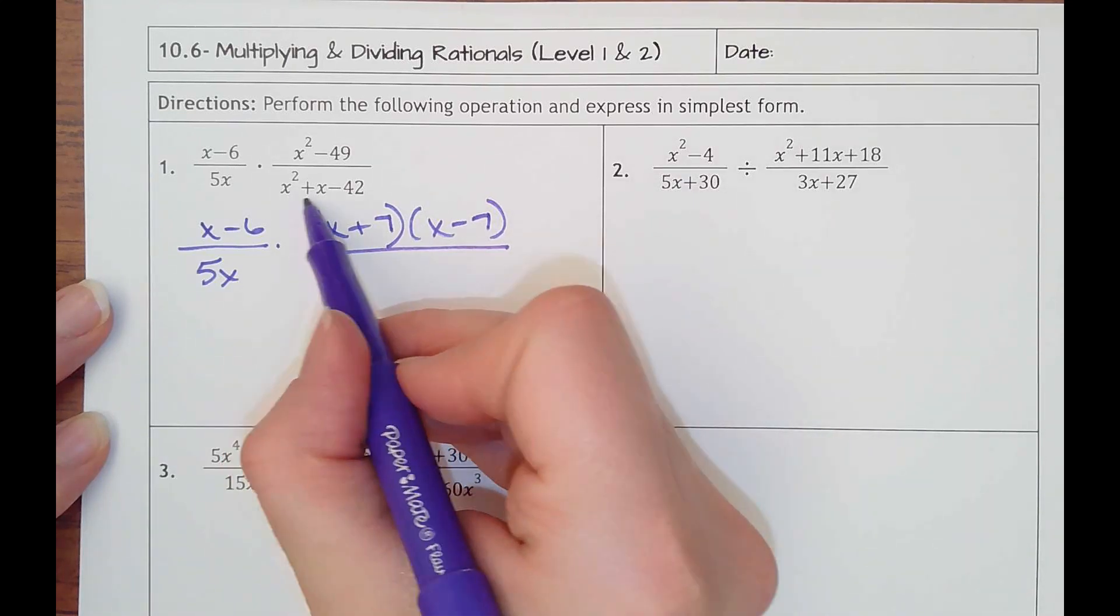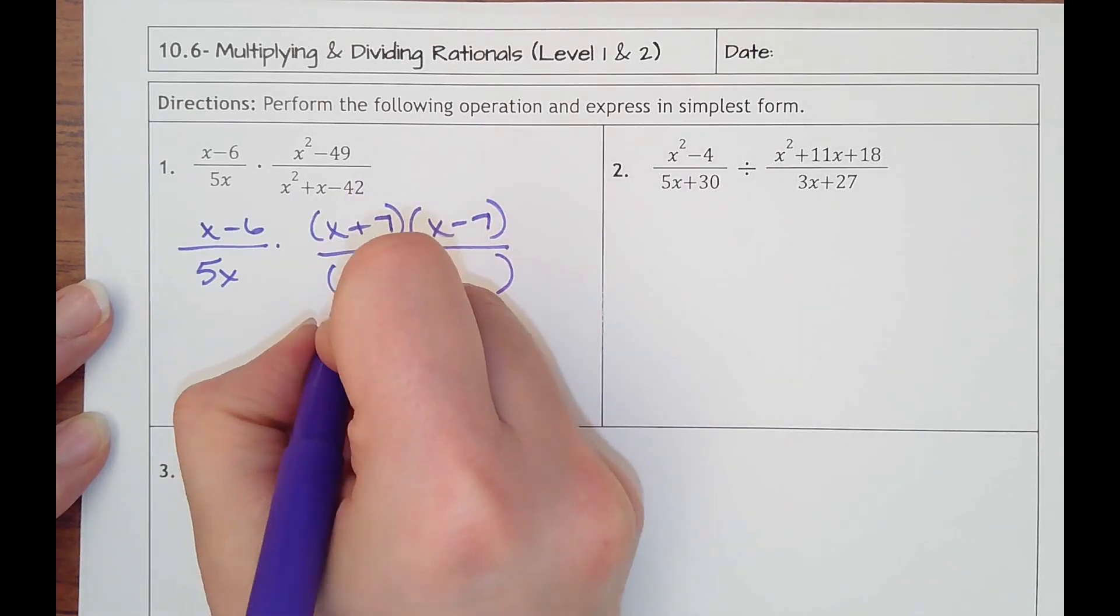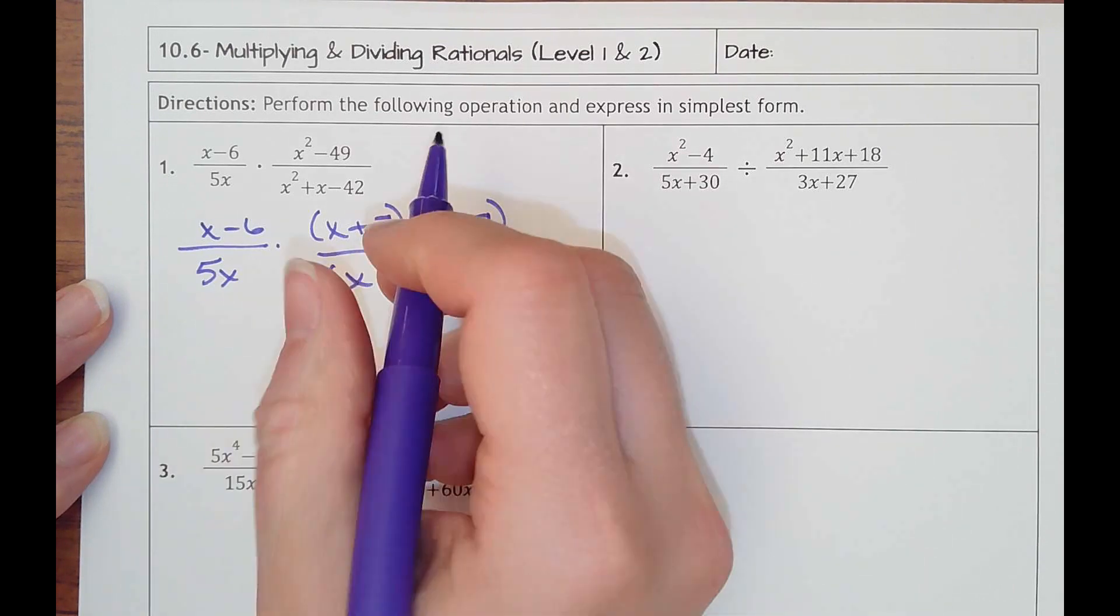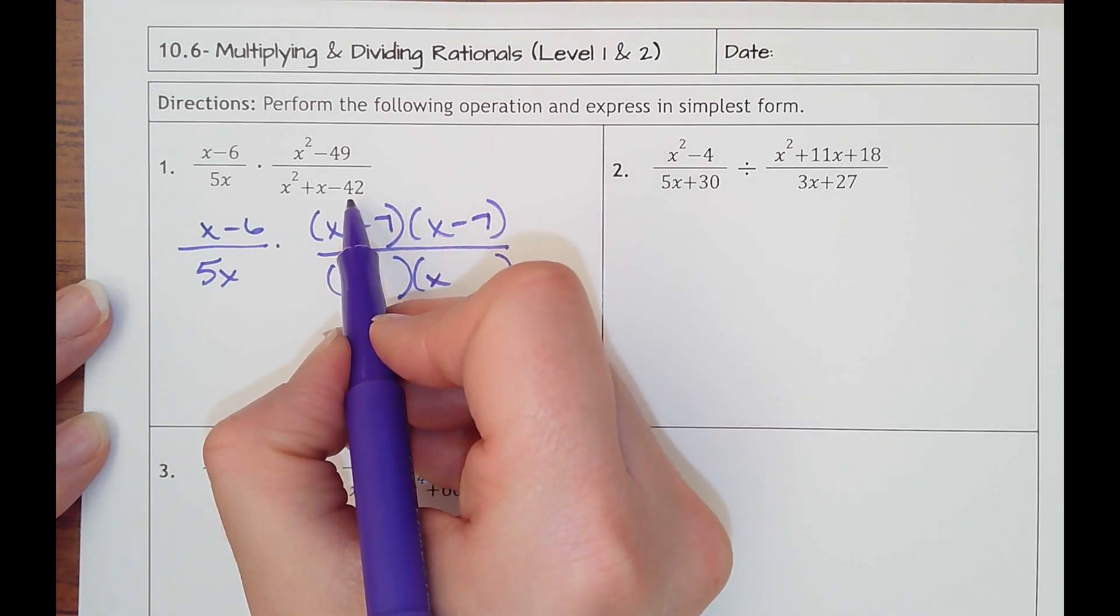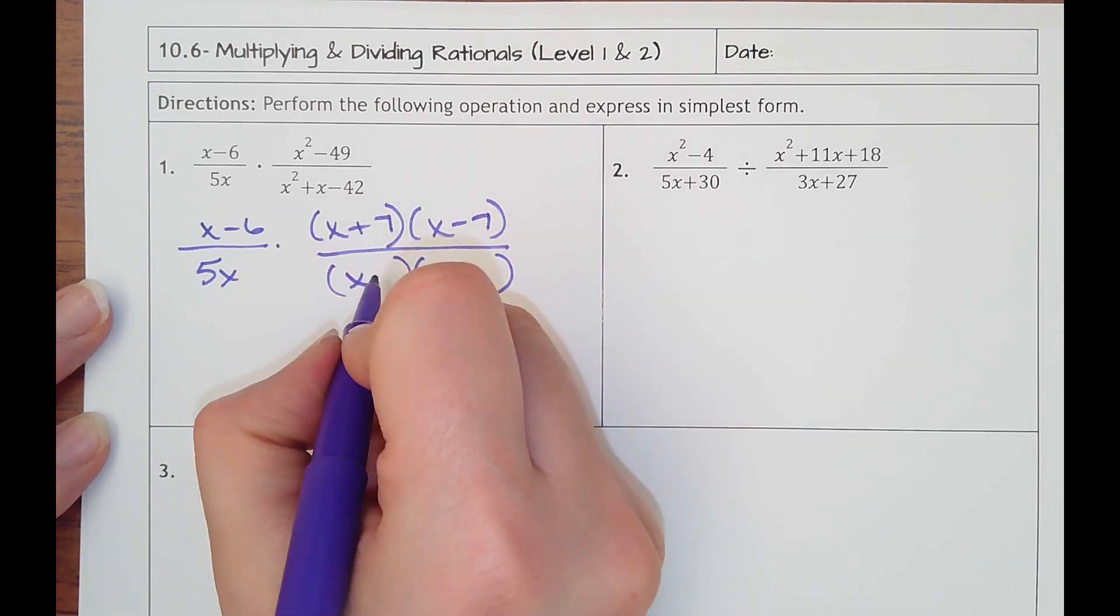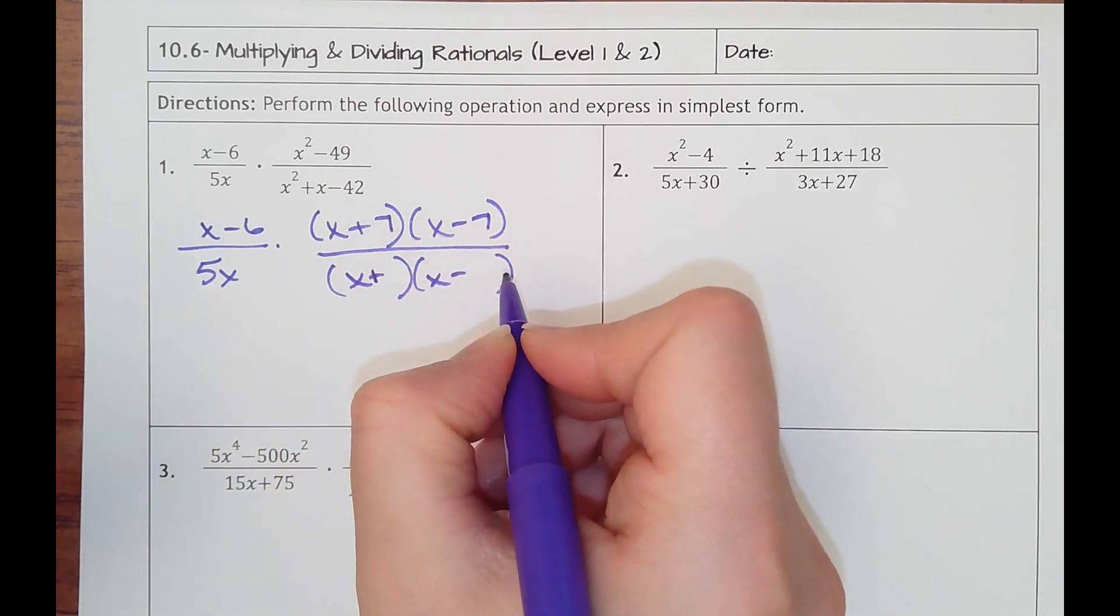In the denominator, there's a basic trinomial I need to factor. So they both start with x times x. I need to multiply to make negative 42 and add to get 1. So I'm thinking, okay, positive times a negative.